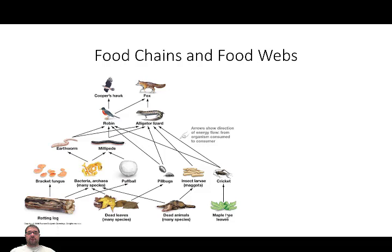Same thing with decaying dead animals — you're going to have some of these organisms consuming that. From that level, the energy goes to another group. You might have earthworms eating archaea, millipedes consuming different types of fungi. Then we're jumping that insect group — these invertebrates like pill bugs, maggots, which are fly larvae, and crickets — jumping straight to the vertebrate level. You'd normally have more layers of invertebrates that eat insect larvae, pill bugs, and crickets.